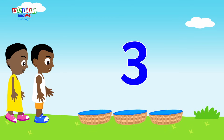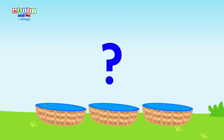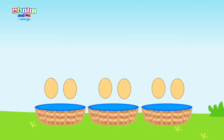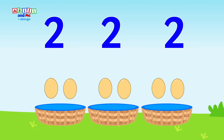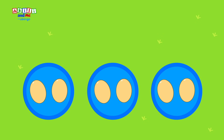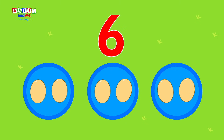Three baskets I can see, inside what could there be? There are two eggs, two eggs in each basket. Wait! How many eggs are there all together? Let's count! One, two, three, four, five, six! Six eggs!